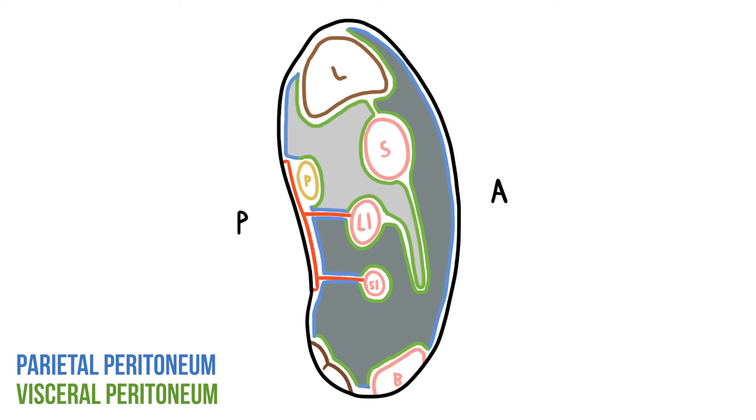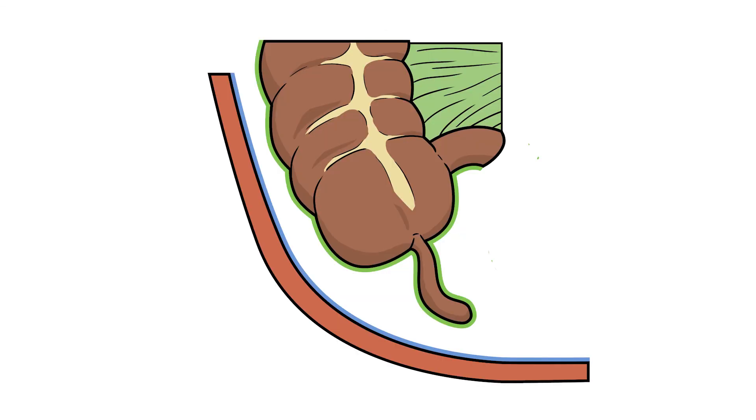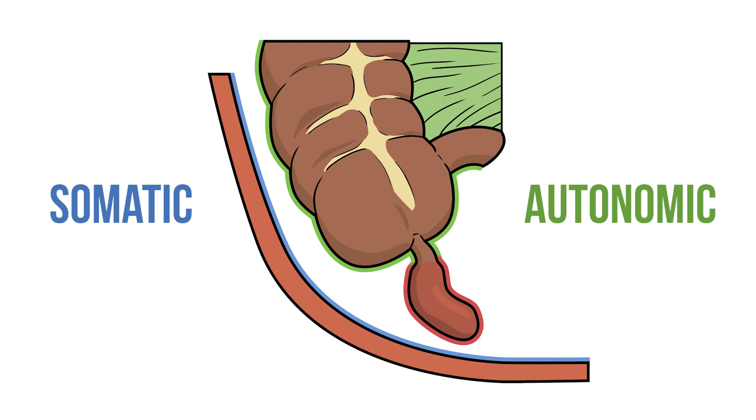The final thing to mention is that although the peritoneal layers are very similar, there is one important difference, and that's their nerve supply. The visceral peritoneum receives autonomic innervation, and the parietal peritoneum receives somatic innervation. This means a problem in an organ that's irritating the visceral peritoneum will present with diffuse, unlocalised pain. But as that problem spreads and develops to irritate the parietal peritoneum, that pain will become sharp and localised.